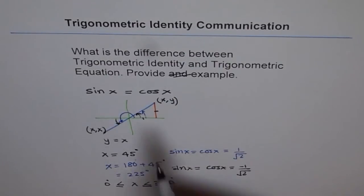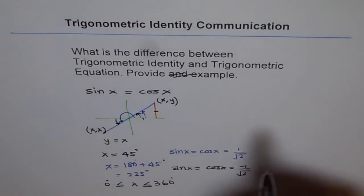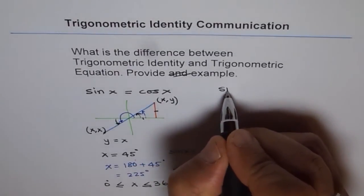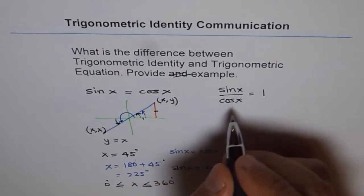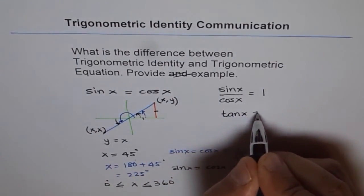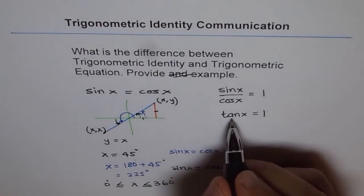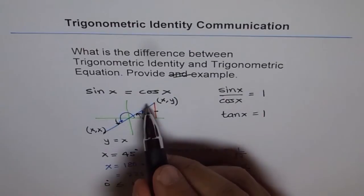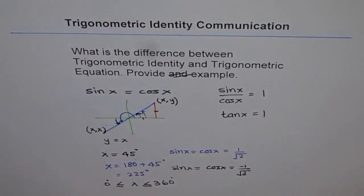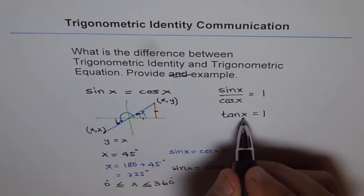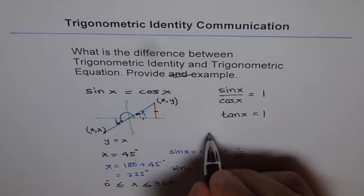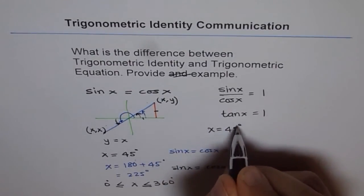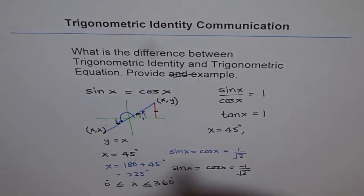I could have solved this in a different way. To solve this equation I could divide both sides by cos x, giving sin x over cos x equals 1, which is tan x equals 1. Tan x equals 1 in quadrant 1 and quadrant 3 when the acute angle x is 45 degrees. So we get the two answers: x equals 45 degrees or x equals 225 degrees.